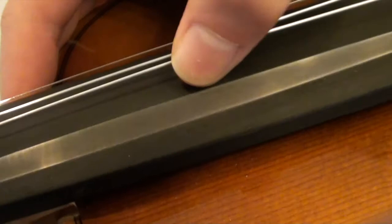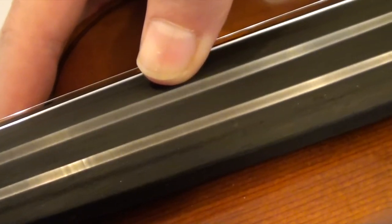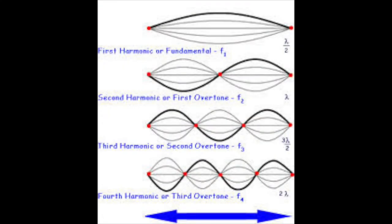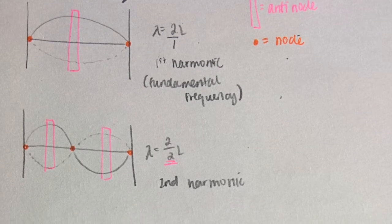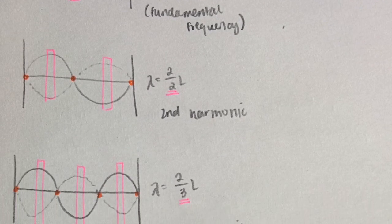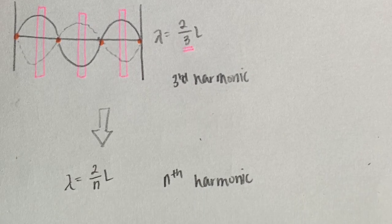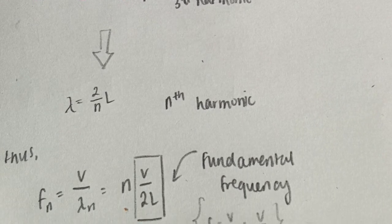When plucked, the strings of the violin can only oscillate with specific standing wave patterns. These patterns are called harmonics and can be seen in the image above. The name of the harmonic corresponds nicely with the number of anti-nodes so that the wavelength of the nth harmonic can be described as lambda equals 2L over n.